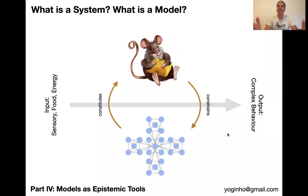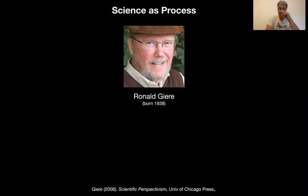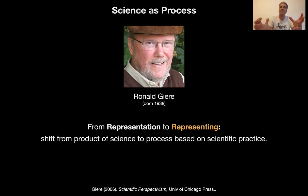Hello, and welcome back to Beyond Networks, the evolution of living systems. Last time, we looked at models and how they're sort of formalized systems. I ended the lecture saying that if we look at science as a process, we need to shift our attention from treating models as abstract representations of real systems to their use in the context of the activity of modeling done by a scientist. So we switch from representation to the activity of representing, from the product of science to the process based on scientific practice of modeling.